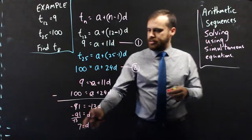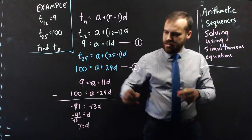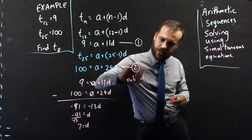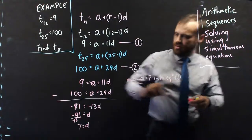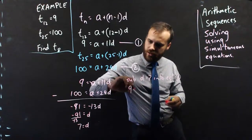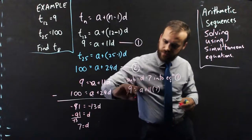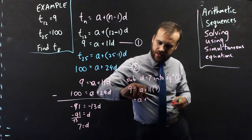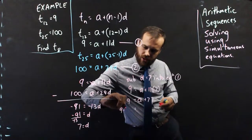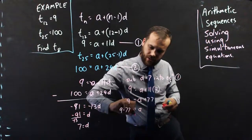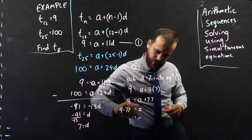So finally, I can sub that back into one of my equations. It doesn't matter which one. And I can find out what a is. So, sub d equals 7 into equation 1. So 9 equals a plus 11 times 7. That means a plus 77 equals 9. 9 minus 77 equals a. And that's going to be negative 68.